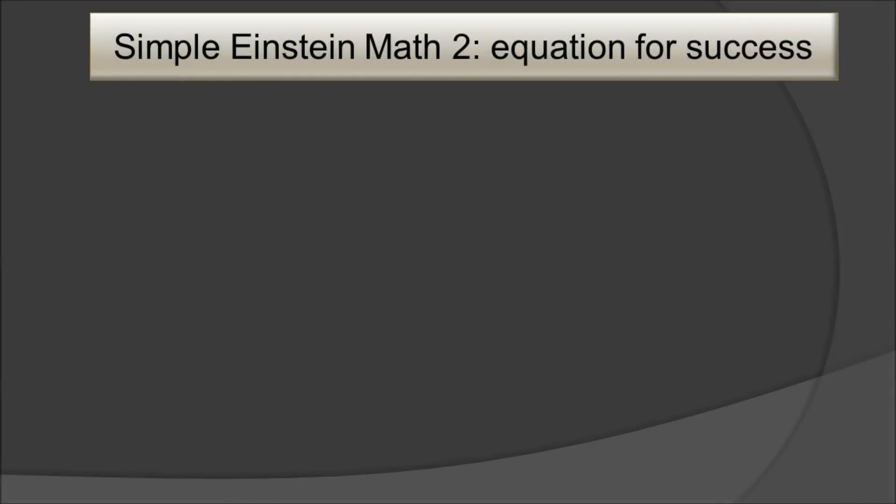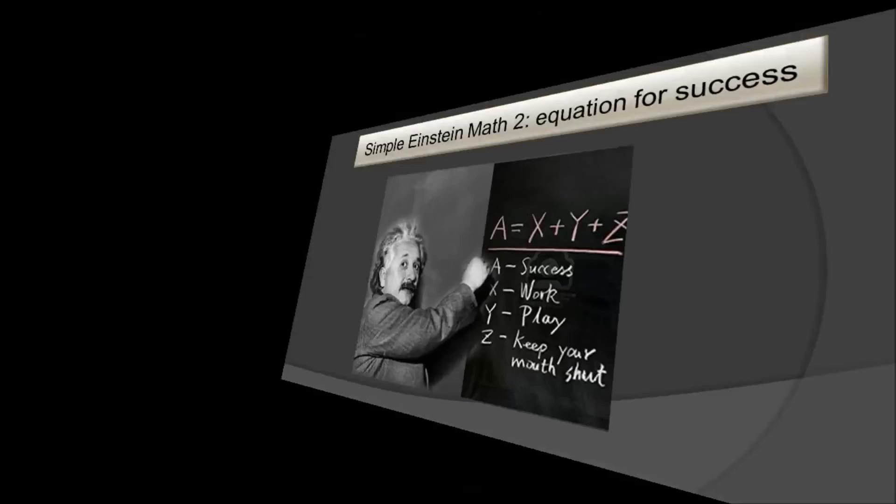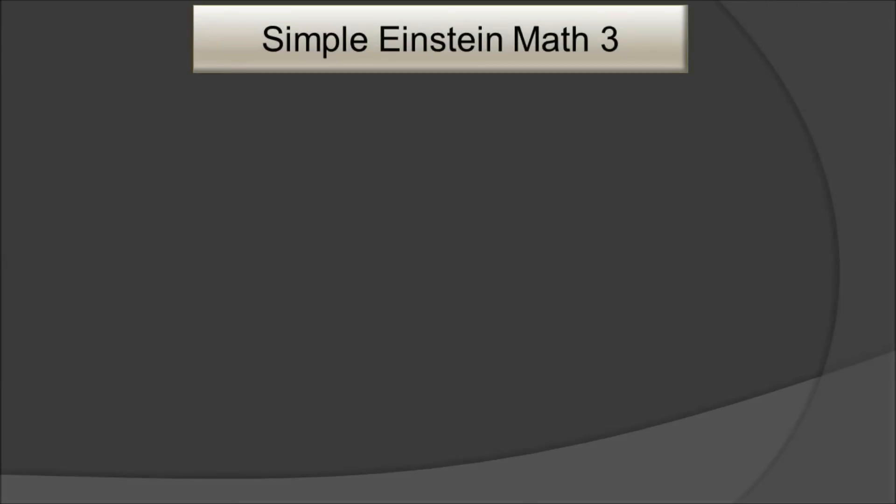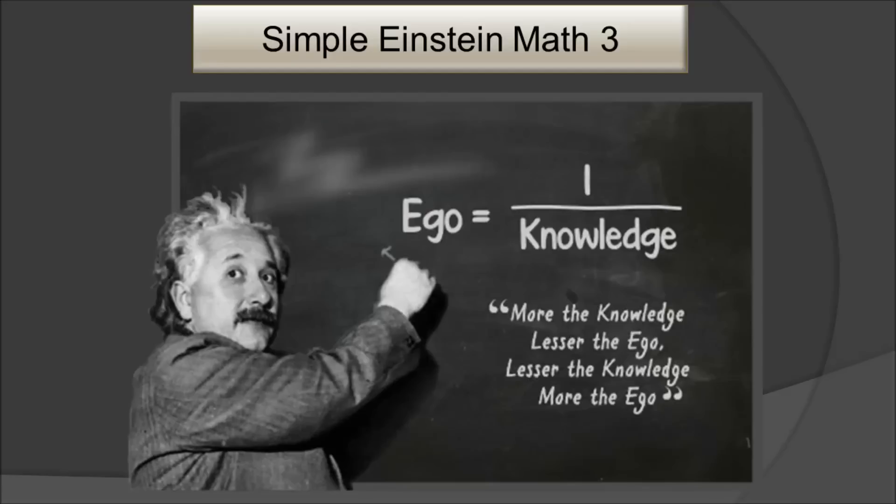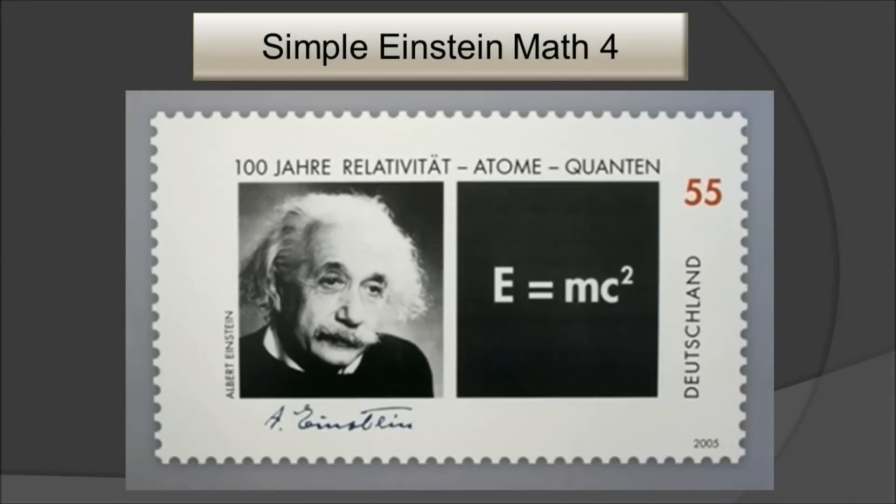The next one is the equation for success. One interviewer asked him once about the success he got and how he achieved that. He came up with this simple formula. The third equation is that ego is inversely proportional to knowledge, a reciprocal equation example. And finally, the most famous one: E=mc².